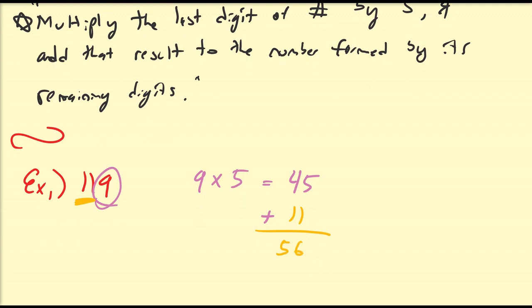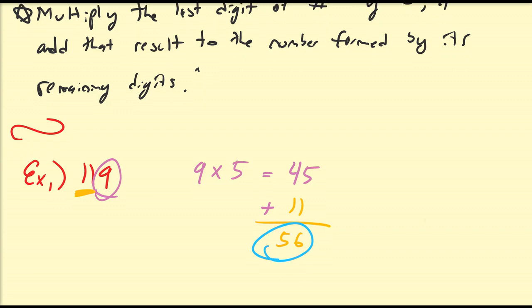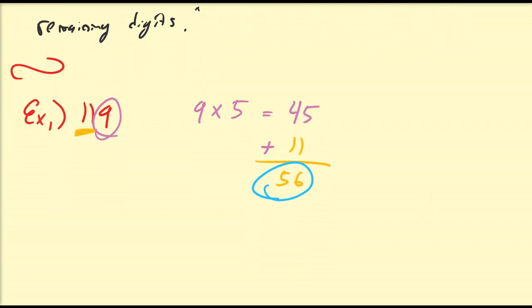The question then becomes: is 56 divisible by 7 or not? Let's assume you do not know this answer, so we're going to continue this pattern again. We're going to multiply 6 by 5 — 6 times 5 is equal to 30 — and then add to it its remaining digit, which is 5, giving us 35.